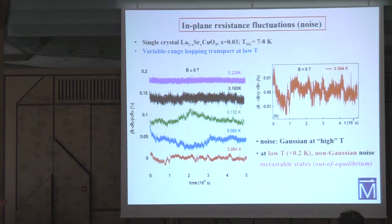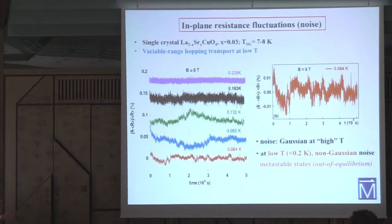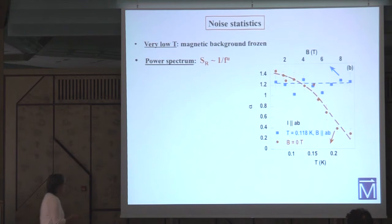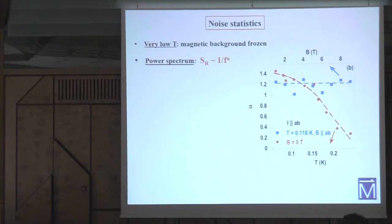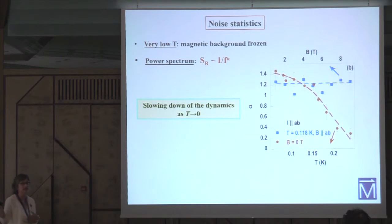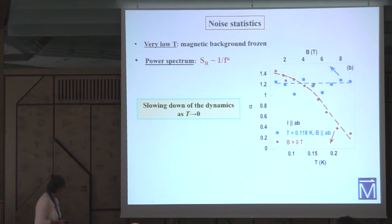One can look at the probability density functions of these fluctuations — simple histograms show they are non-Gaussian and their shape depends on the measurement time window. Looking at the power spectrum, we find in general that it is a 1/f type. The exponent alpha increases as temperature is reduced, reaching values of about 1.4. This means spectral weight is shifted towards lower frequencies — the dynamics of the system slows down as temperature decreases towards zero. Large values of alpha greater than 1 also reflect the underlying increasing non-Gaussianity of the noise.